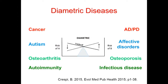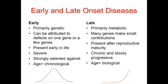One of the most important points I'd like to make is that there's a fundamental difference between early-onset forms of disease and late-onset forms. Early-onset forms are primarily genetic; they can be attributed to one or a few genes, present early in life, are severe, and are strongly selected against, so they tend to be rare. With these diseases, age is just chronological — it's a matter of time before the disease expresses itself. Late-onset chronic diseases of aging are primarily metabolic, not primarily genetic, which is one reason we don't find much in GWAS.